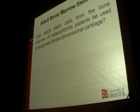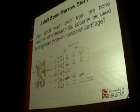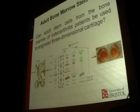This led us to ask the question as to whether it would be possible to use adult stem cells from the bone marrow of patients with osteoarthritis, to see whether we could use those to generate a new three-dimensional cartilage. The principle would be to take a bone marrow aspirate from the iliac crest, to then isolate the mesenchymal stem cells and drive them down the chondrogenic lineage using specific growth factors, and then eventually produce a new three-dimensional cartilage tissue.